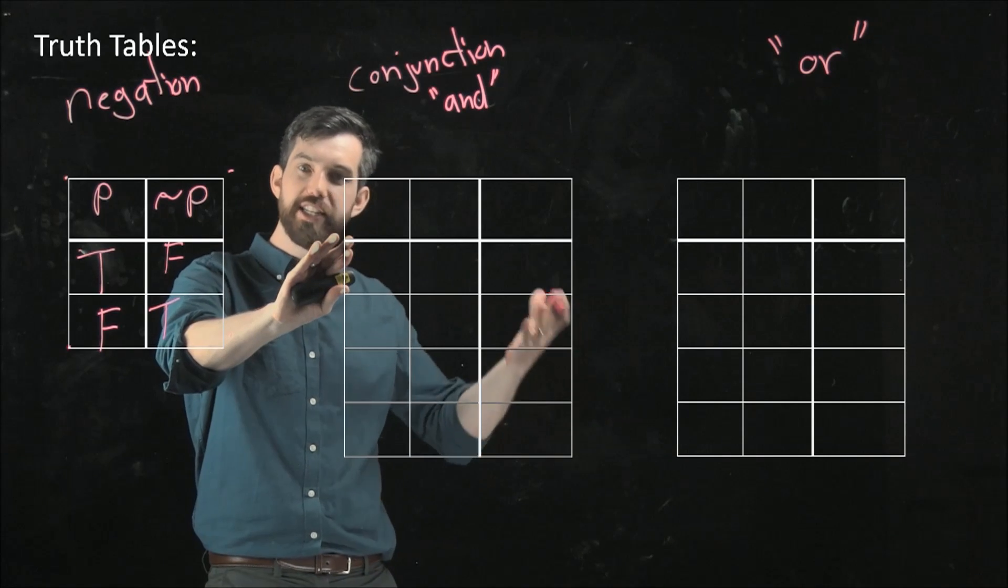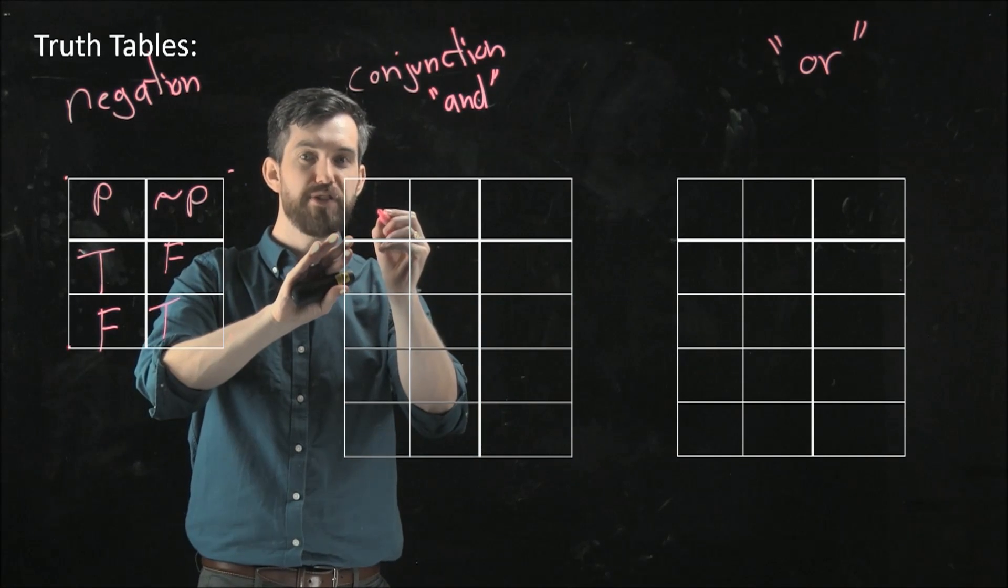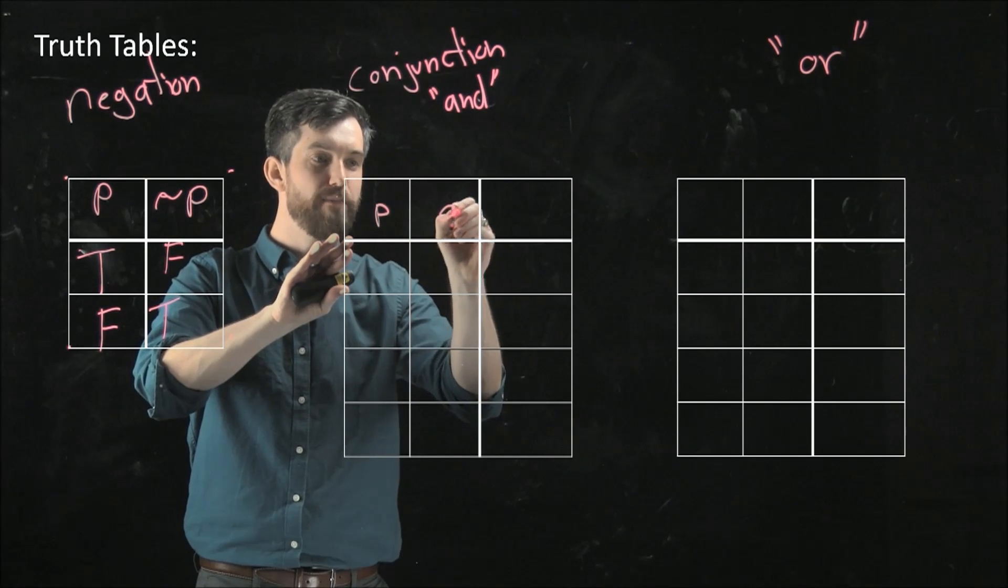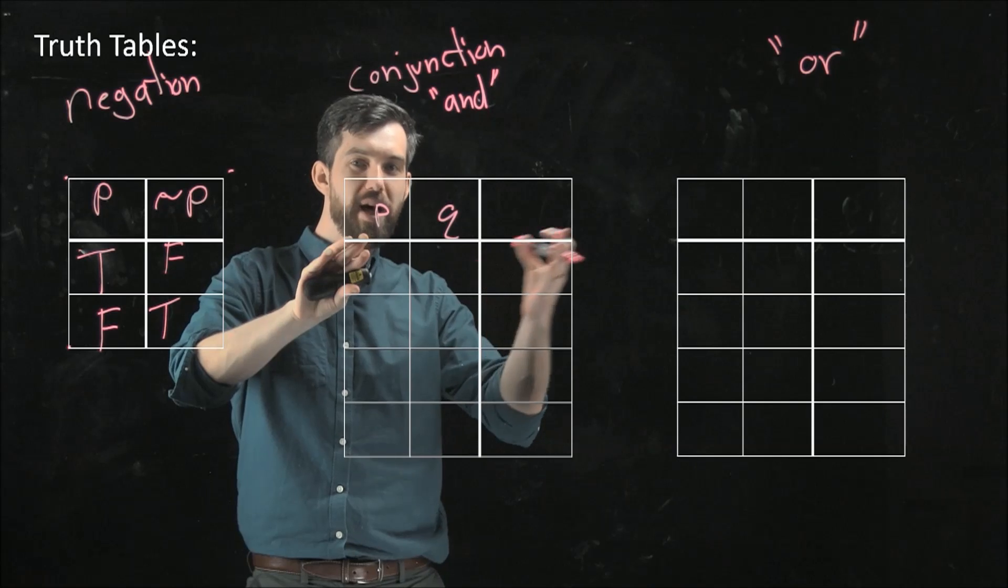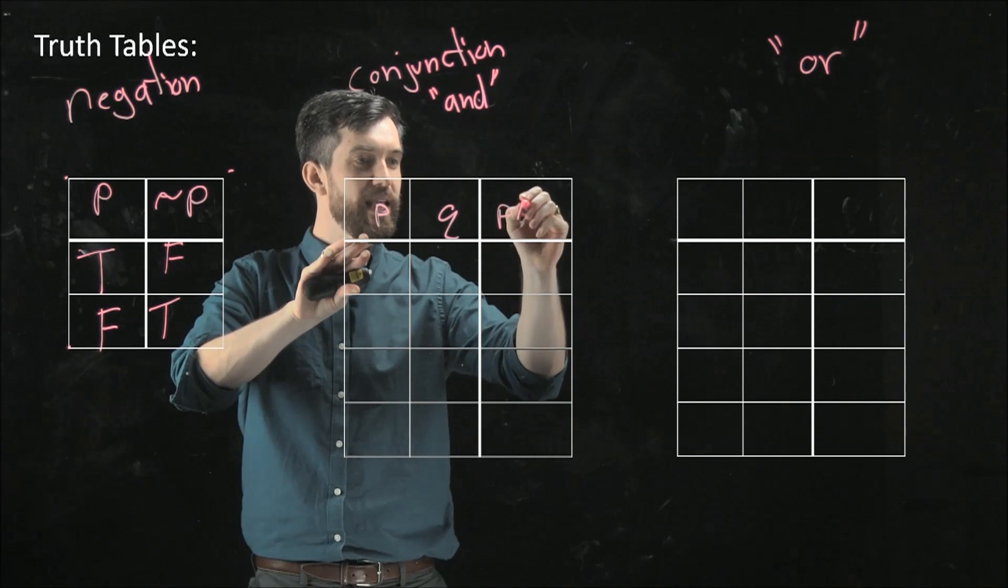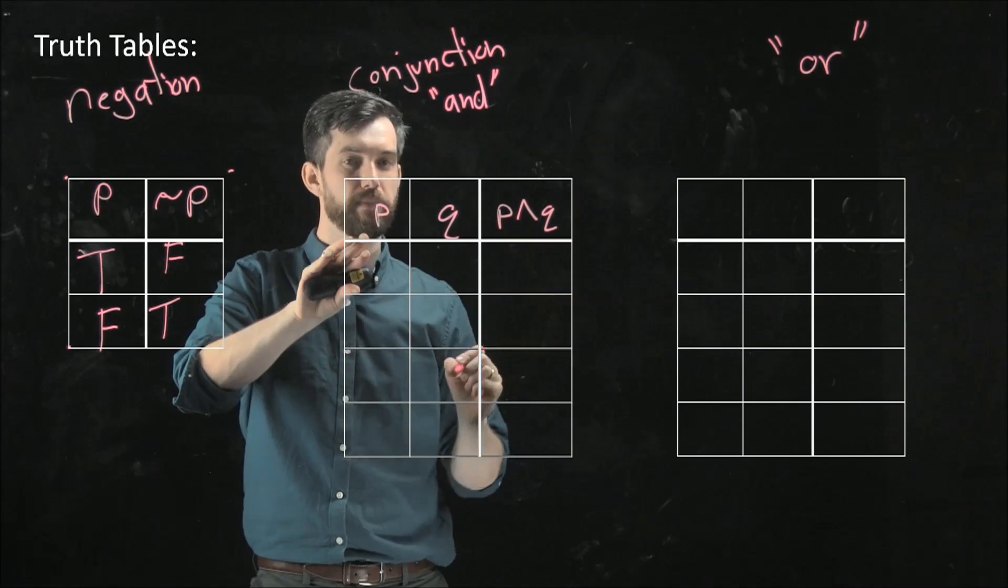But for conjunction, it's p and q. So I want to have two different possible inputs. I have my p, and then I also have my q, and then my output here is going to be p and q.